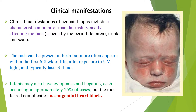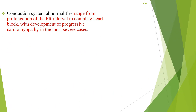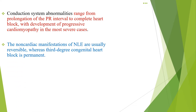Infants may develop cytopenia and hepatitis, each occurring in approximately 25% of cases. But the most feared complication is congenital heart block. Conduction system abnormalities range from prolongation of the PR interval to complete heart block with development of progressive cardiomyopathy in the most severe cases. The non-cardiac manifestations of neonatal lupus are usually reversible, whereas third-degree congenital heart block is permanent.